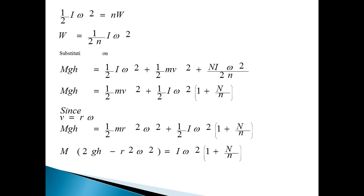Since small n number of rotations are made after the mass is detached, the kinetic energy of the wheel ½Iω² is equal to nW. Then W = (1/2n)Iω². On substitution, we get Mgh = ½Iω² + ½mv² + NI(ω²/2n).